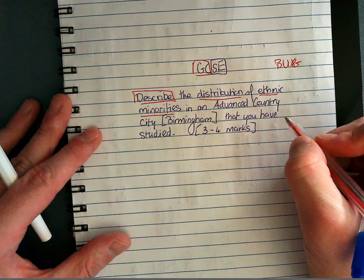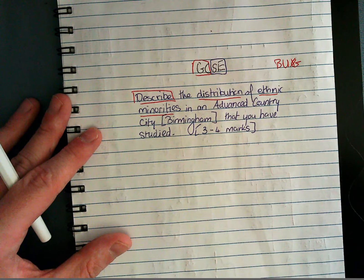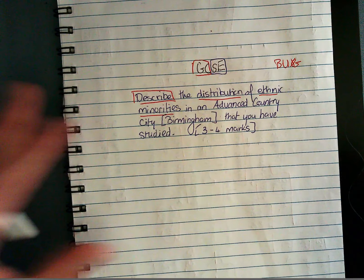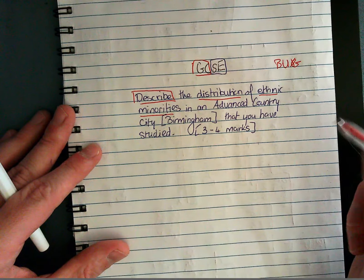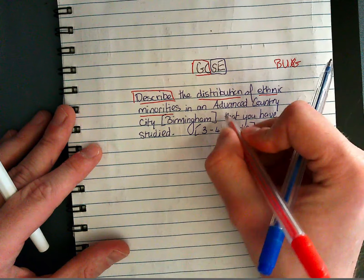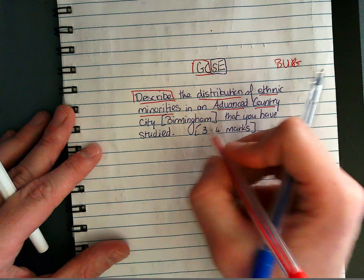And then G glance back over at the question to see if you're using those keywords. Ethnic minorities is incredibly important here, we're going to be using that word in pretty much every sentence or referring to a pronoun. And advanced country that we've studied is Birmingham.